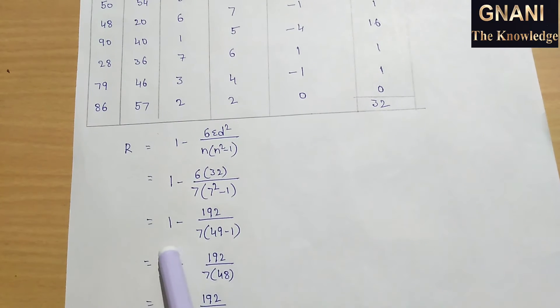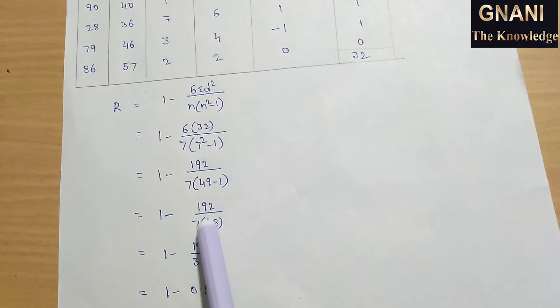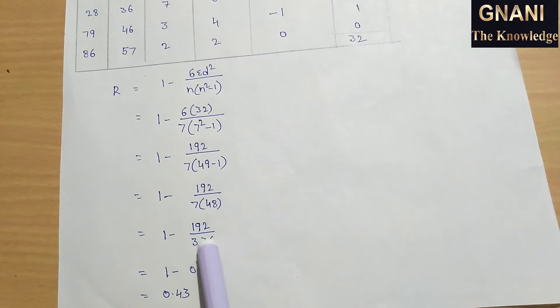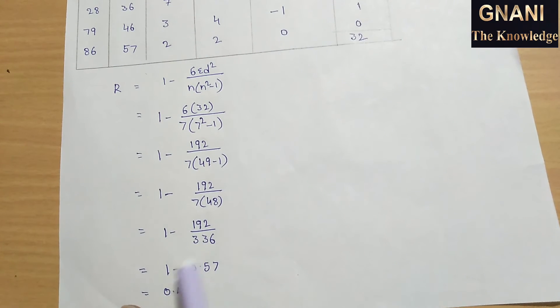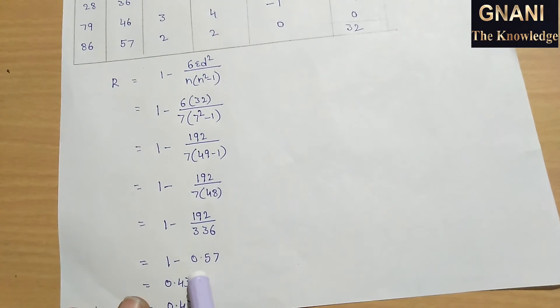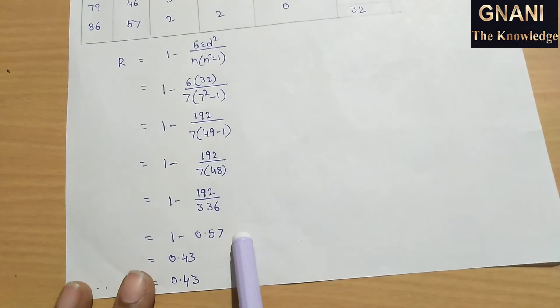Then 1 minus 6 into 32 is 192 by 7 into 7 square is 49 minus 1. Then 1 minus 192 by 7 into 48. 1 minus 192 by 7 into 48 is 336. Then 1 minus 0.57. The last calculation: 1 minus 0.57 is equal to 0.43.